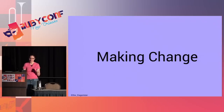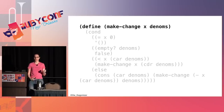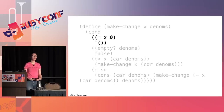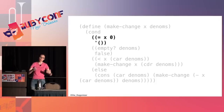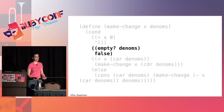Here's the code that makes change in Racket. The function takes two arguments: x is the amount of money to make change for, and 'denoms' is the list of denominations available in the cash drawer. The first case: if the amount is zero, return an empty list — how do you make change for zero? You give someone nothing.